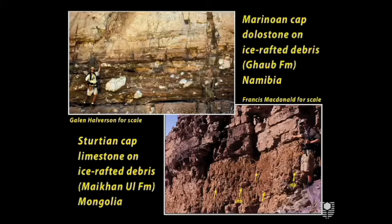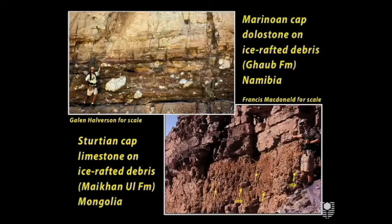Here are two examples of what cap carbonates typically look like at their base. This is the Sturtian cap carbonate in western Mongolia, with Francis McDonald for scale, pointing to the knife-sharp contact between a stratified diamictite with lots of ice-rafted dropstones and this organic-rich limestone that directly overlies it. And here in Namibia, the Marinoan cap carbonate pointed to by Galen Halverson, where the terminal glacial deposits loaded with ice-rafted debris are directly overlaid by a peloidal, low-angle, cross-stratified, pale-colored dolostone in which direct evidence of ice or dropstones are totally lacking.